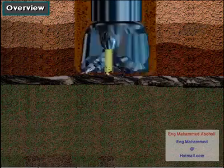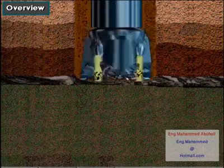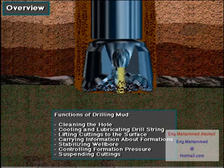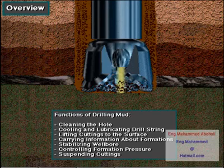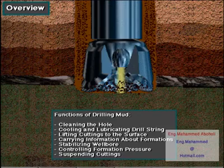When circulated down the drill string and up the hole, drilling mud serves many functions. For example, mud cleans the hole, cools and lubricates the bit and the drill string, lifts cuttings to the surface, carries information about the formations being drilled, stabilizes the wellbore, controls formation pressure, and suspends cuttings when pumping stops.